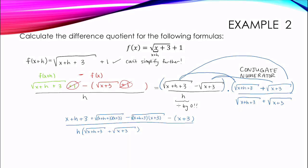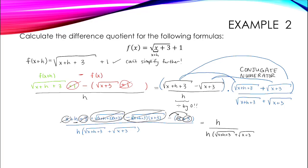Now we simplify the numerator. The two middle square root terms cancel because they are positives and negatives of each other — multiplication is commutative so order doesn't matter. Looking at the remaining terms, the positive x and negative x cancel, and the positive 3 and negative 3 cancel. That leaves just h in the numerator, which cancels the factor of h in the denominator. This leaves us with 1 over the square root of x plus h plus 3 plus the square root of x plus 3. If we plug in h equals 0, we see there's no division by zero, so we're done.